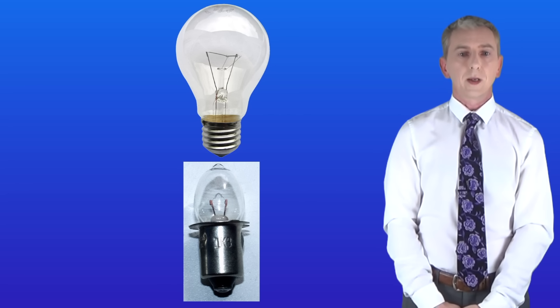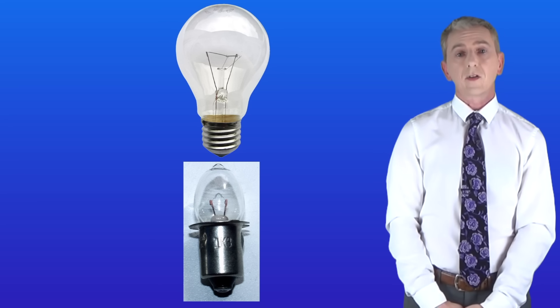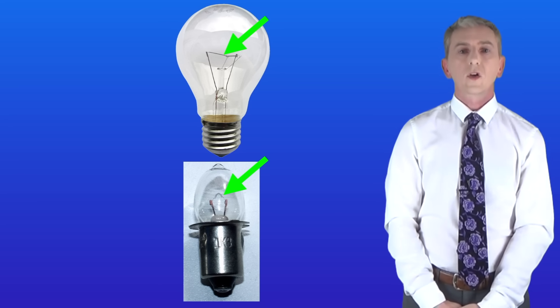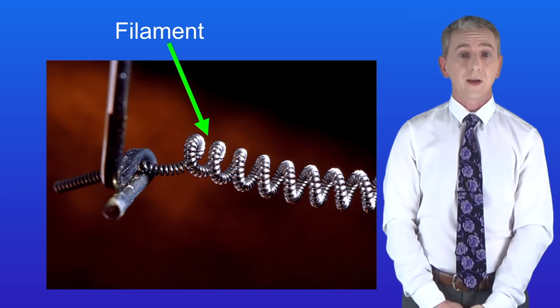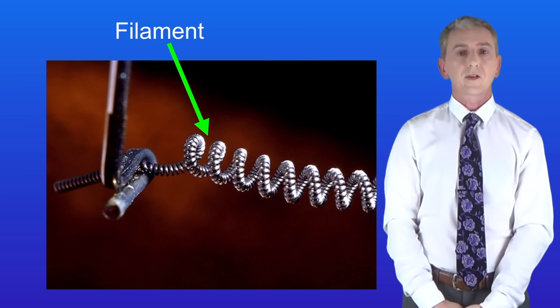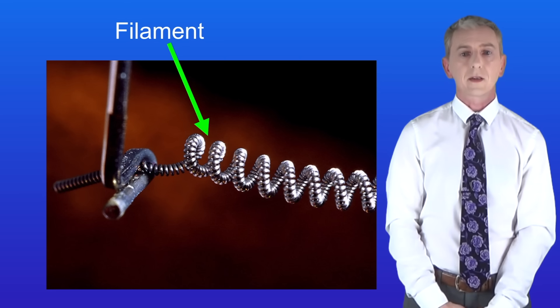Now the word filament means a very fine wire and you can see the filaments in the lamp and in the torch bulbs here. So this shows you a close-up of a filament and you can see that the wire is very tightly coiled. In a filament lamp this wire gets extremely hot when an electric current passes through it. This causes it to glow and give out light like this.